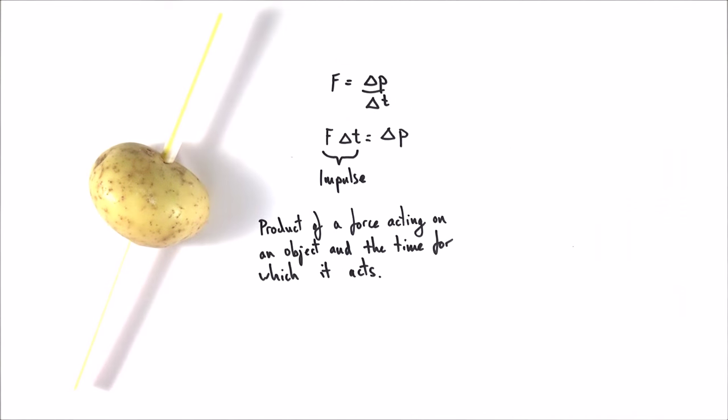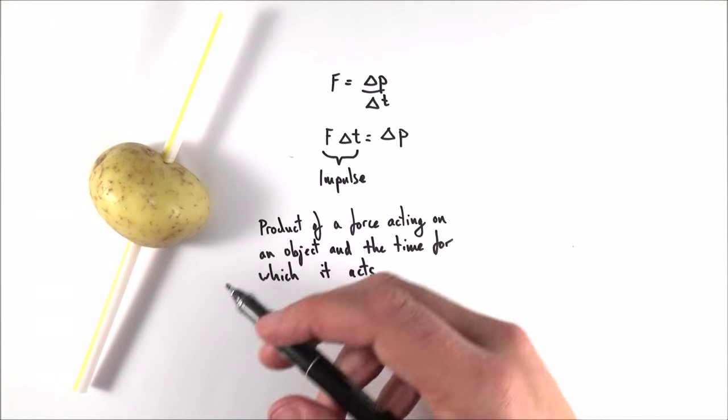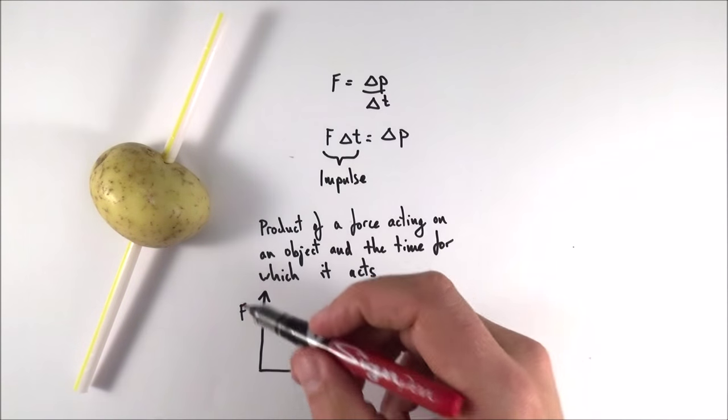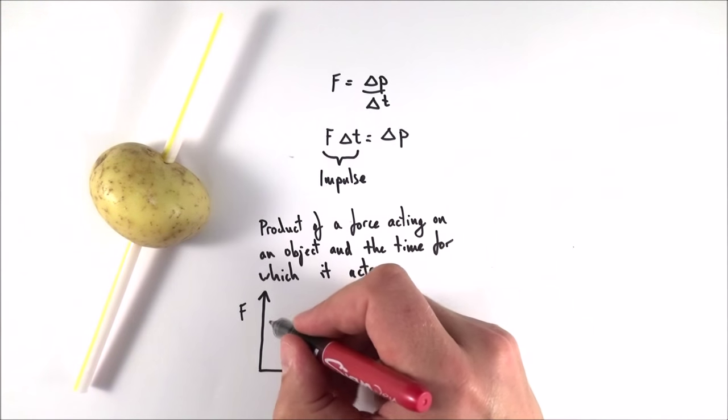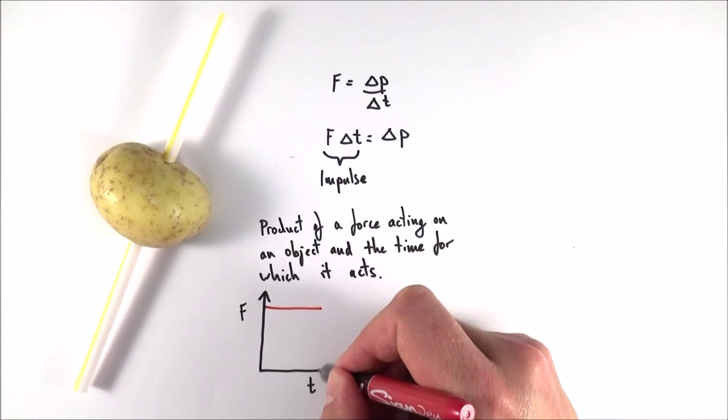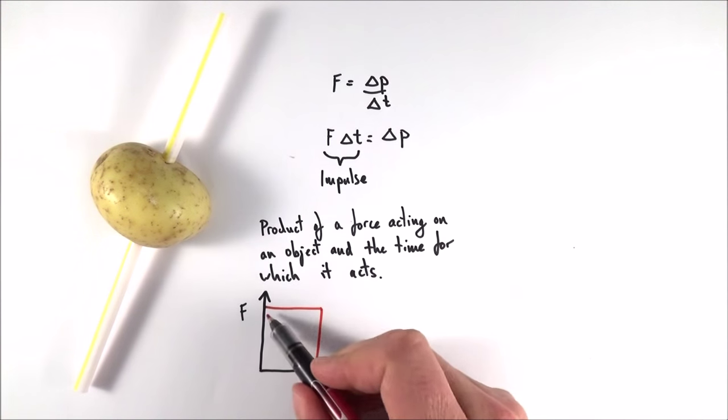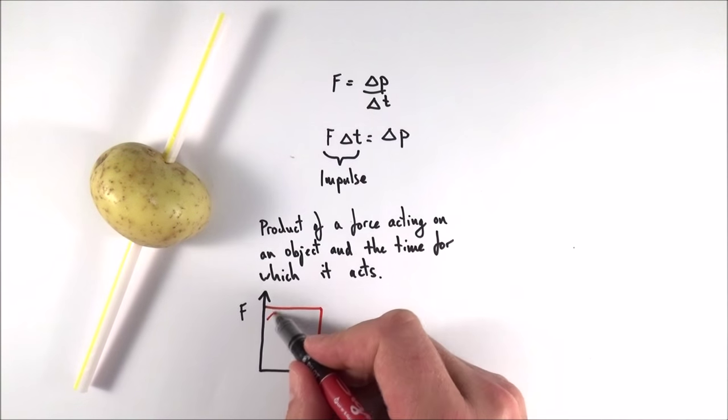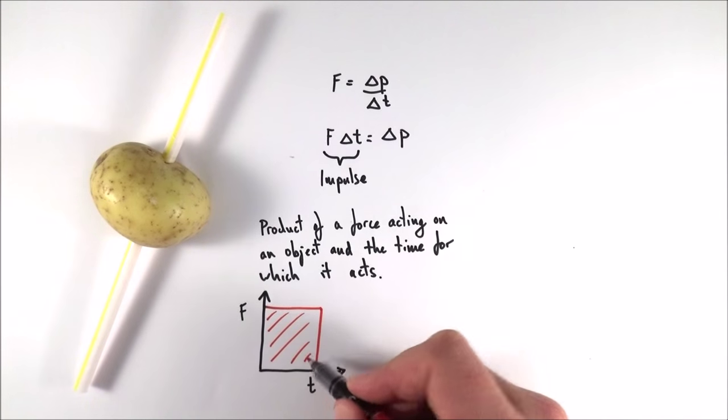We can look at it graphically. If we maybe had a graph of force against time, then we might plot how the force on an object changes with time. And effectively, if we look at the area underneath this graph, perhaps a force acting for a certain amount of time, the area under that graph is equal to the impulse.